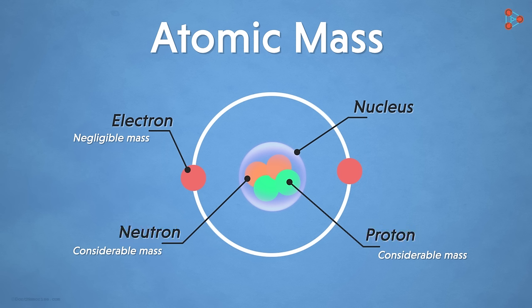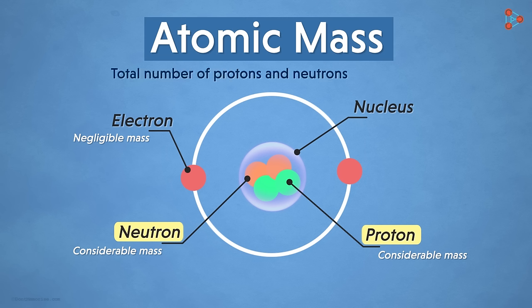Now tell me one thing, which among these two particles should be considered? Shall we consider only the mass of protons or only the neutrons, or both together? Well, since both have a significant amount of mass, we will consider the mass of both together. Hence, the atomic mass is defined as the total number of protons and neutrons present inside the nucleus of the atom. It is also referred to as the mass number.